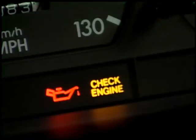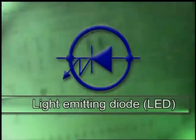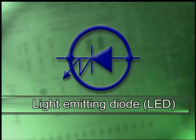A light emitting diode is a diode that acts as a lamp, illuminating when current is flowing through it. The symbol for a light emitting diode is the same symbol as a diode enclosed in a circle.